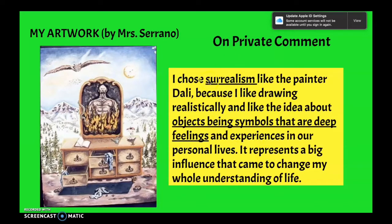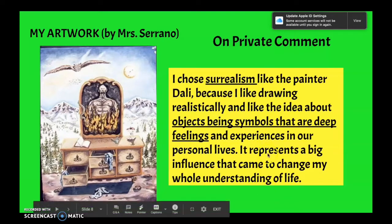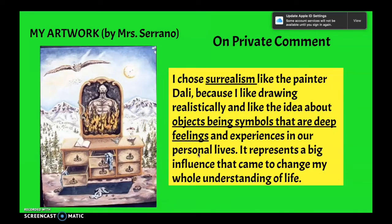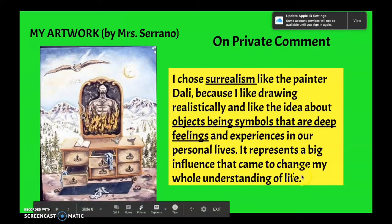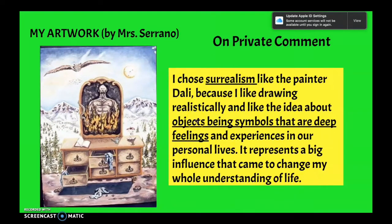For example, I said I chose Surrealism because I like the realistic type of drawing and the idea that objects are symbols representing deep feelings and experiences in personal lives. So I just wrote what it represents to me. You're going to have the original artist's work attached and your own work attached, and on a private comment on the assignment before you click turn in, you'll explain your understanding of the movement and why you chose it.